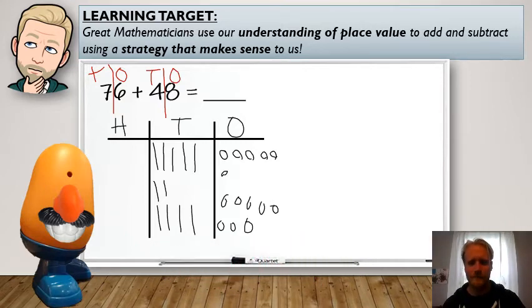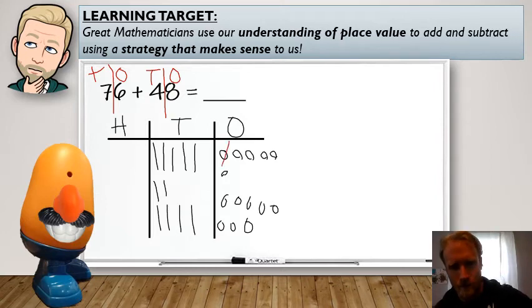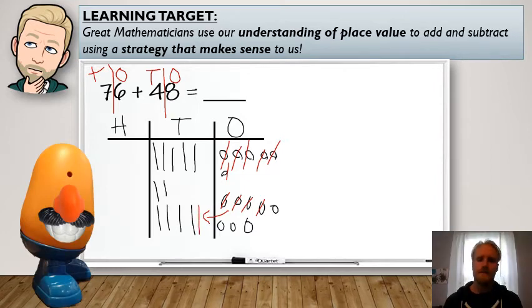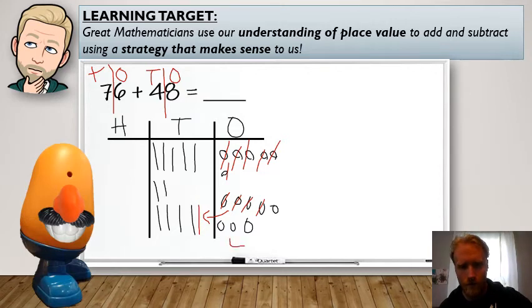All right. So let's go ahead and do that. So I'm going to cross out 10. One, two, three, four, five, six, seven, eight, nine, 10. I'm going to draw my arrow. I'm going to add a 10 to the tens place. All right. So that leaves me with one, two, three, four in the ones place.